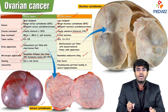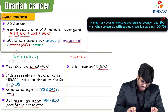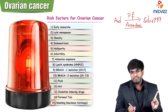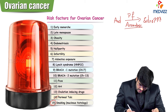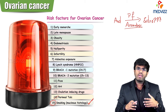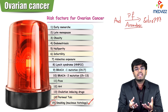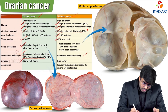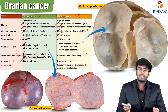Smoking is a risk factor specifically for mucinous histology ovarian tumors — tumors containing mucin. This was intentionally held back until now. So for mucinous tumors, smoking is a very important risk factor.